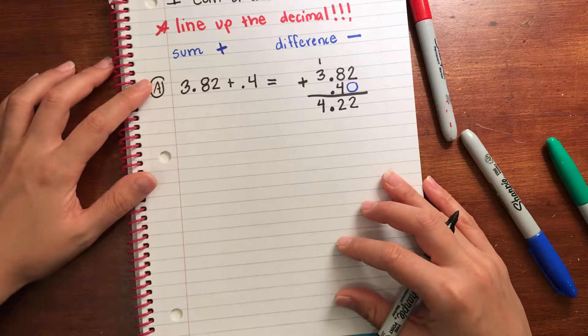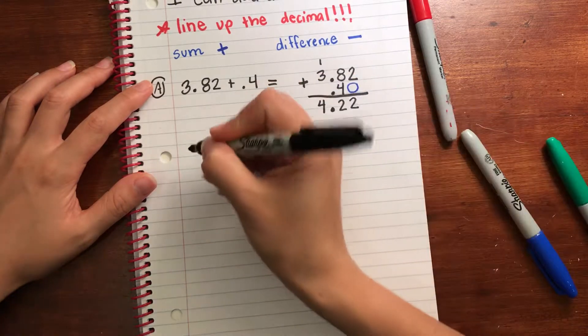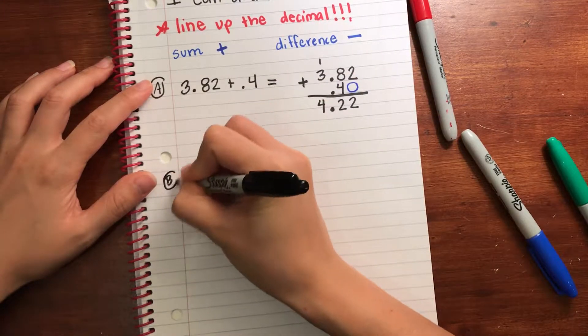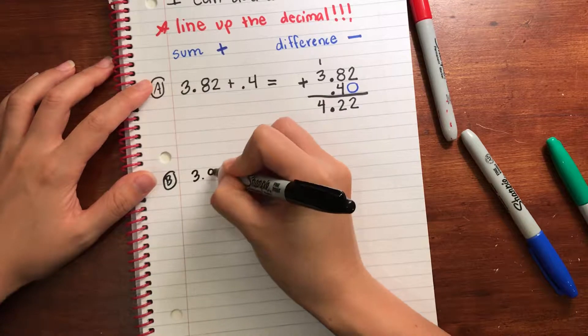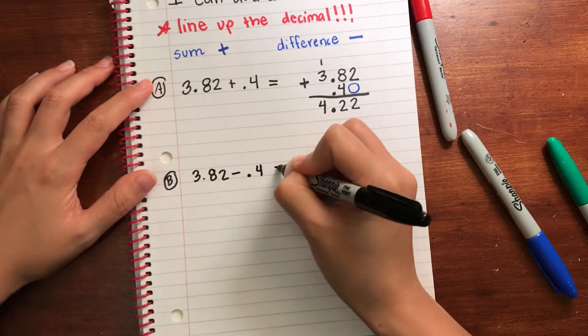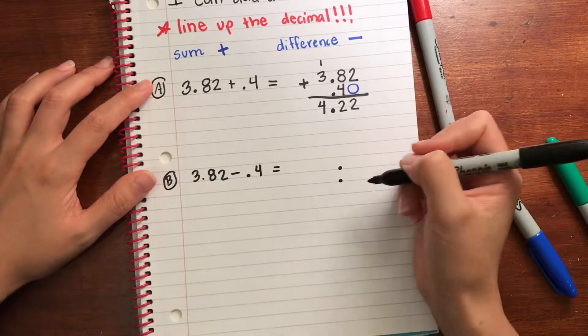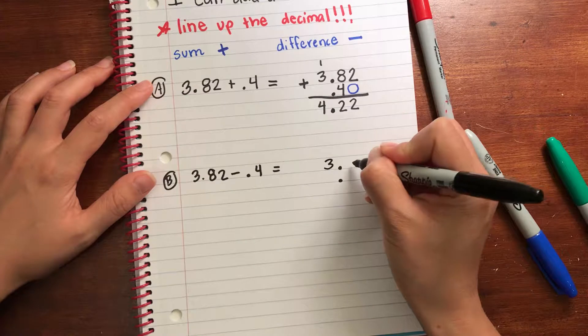So that's adding. Let's look at subtraction. Let's use the same values but instead of adding them together we're gonna subtract them. So 3.82 minus four tenths. Again, you're going to line up your decimal because when you line up the decimal you automatically line up the place value.